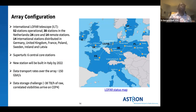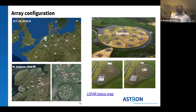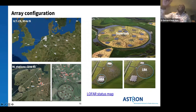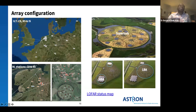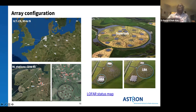The very central six antennas are referred to as supertiles and each station has a specific number assigned to it. For international stations, the name begins with the country code — for example, the UK station is UK608, German stations begin with DE, Sweden with SE. Each LOFAR station has two types of antennas: High Band Antennas (HBA) and Low Band Antennas (LBA).